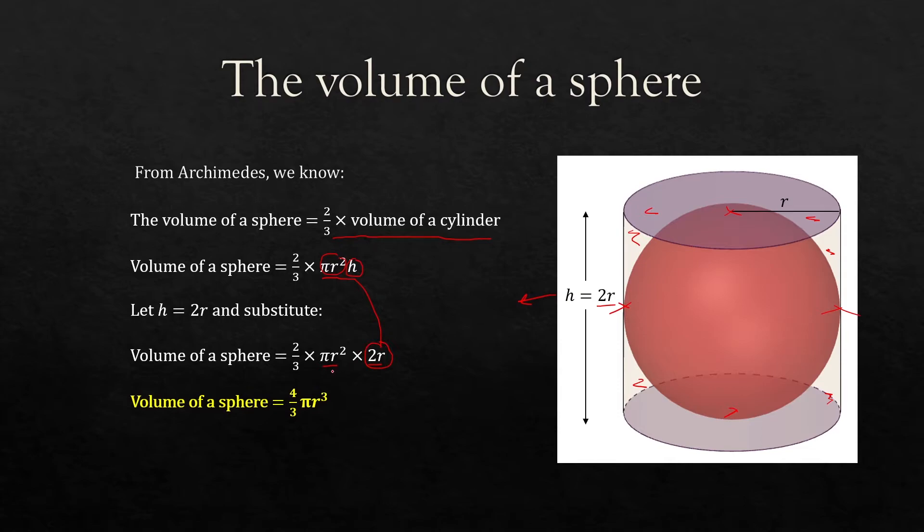So when we simplify our formula we'll get 2 times 2 which is 4, 3 is in the denominator, we have a pi and r squared times r is r cubed. So this is our volume of a sphere: 4/3 times pi r cubed.